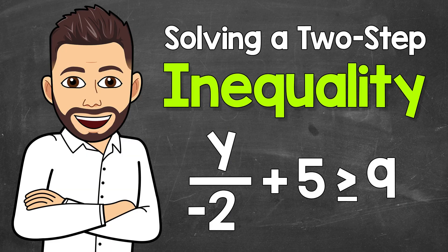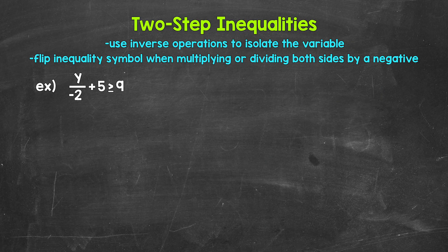Welcome to Math with Mr. J. In this video, I'm going to cover how to solve a two-step inequality. When we solve two-step inequalities, we want to isolate the variable — get it by itself on one side of the inequality. We do that by using inverse operations. This is very similar to solving two-step equations.